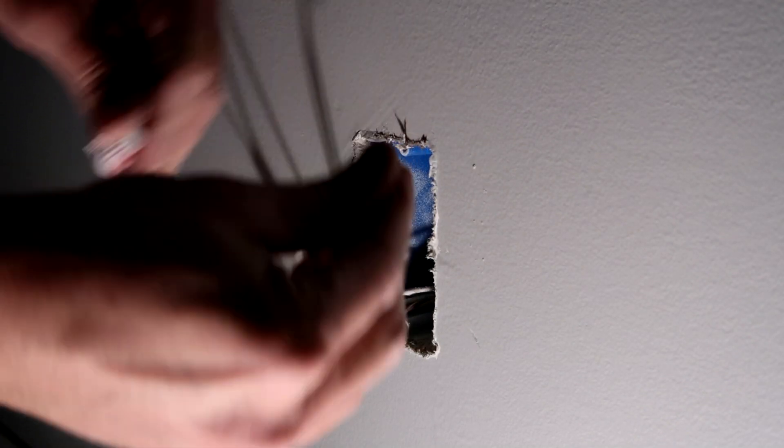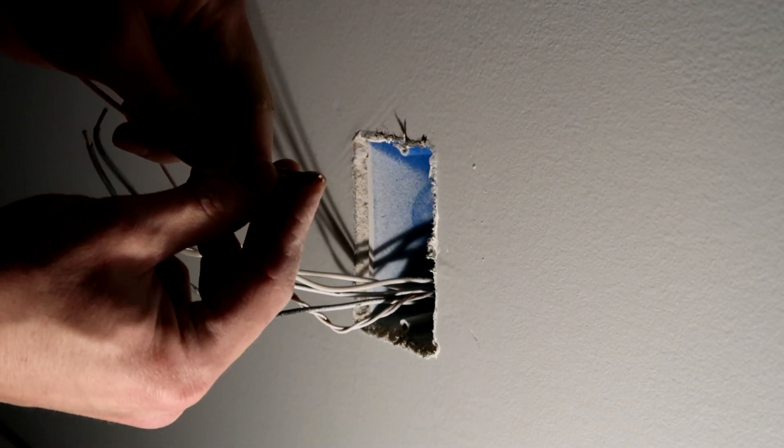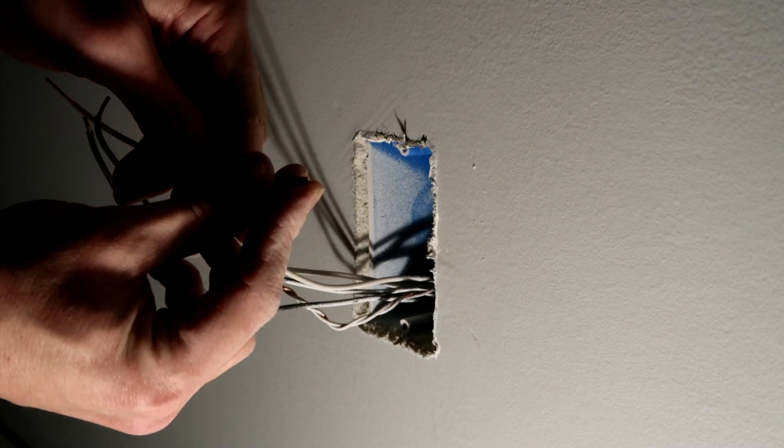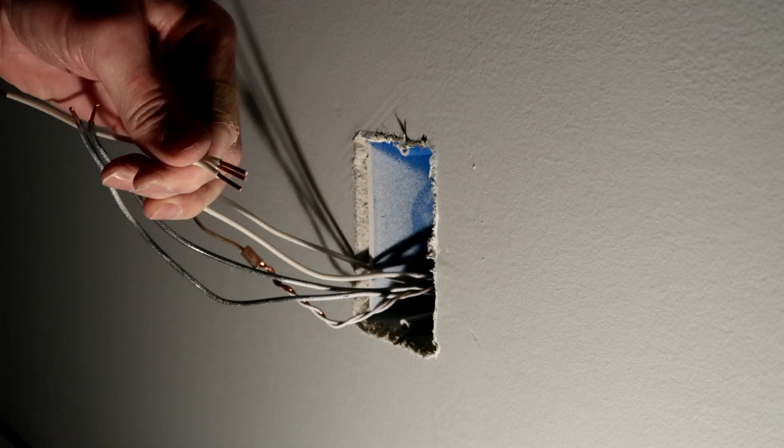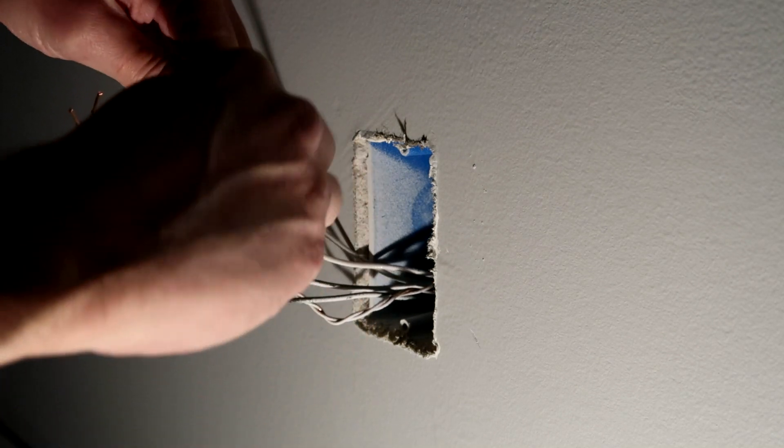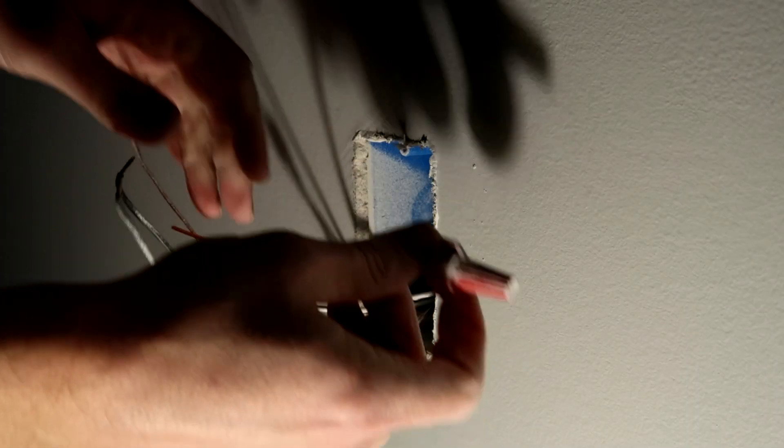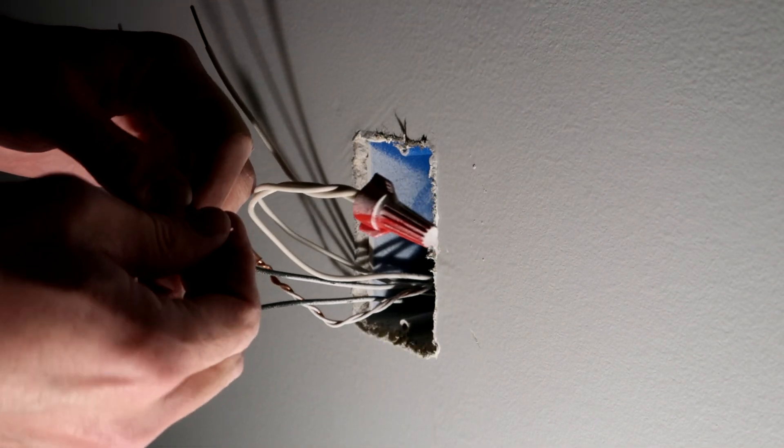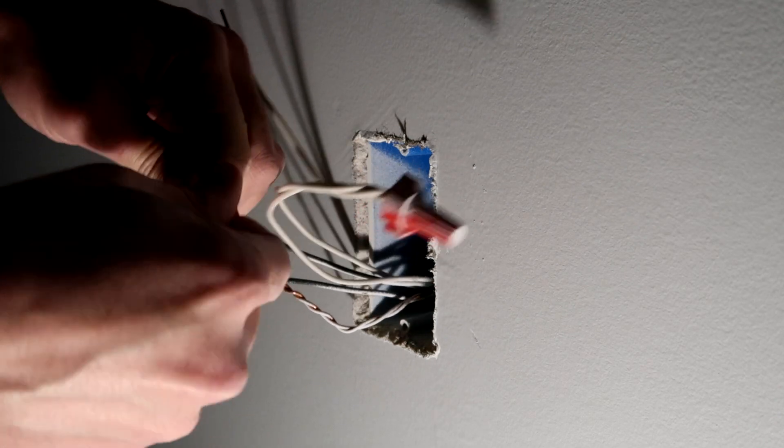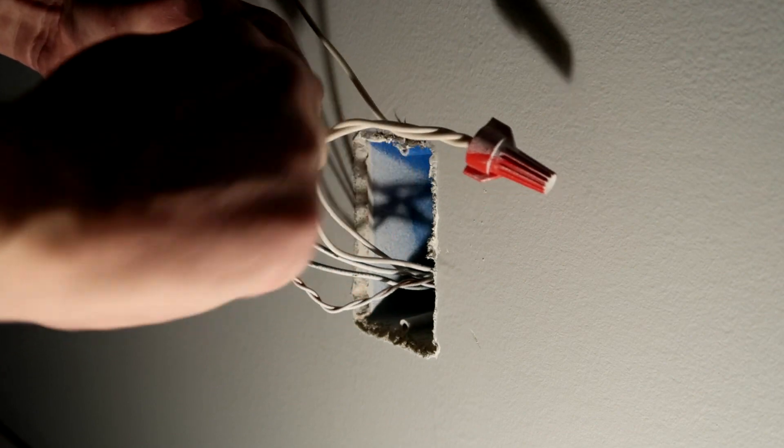So first thing we're going to do is we're going to take this, we're going to take both of the wire nuts off. Pigtails that we created earlier we're going to crimp in or we're going to wire that in like this. Okay, like that. Now you're going to do the hots which are the black wires.